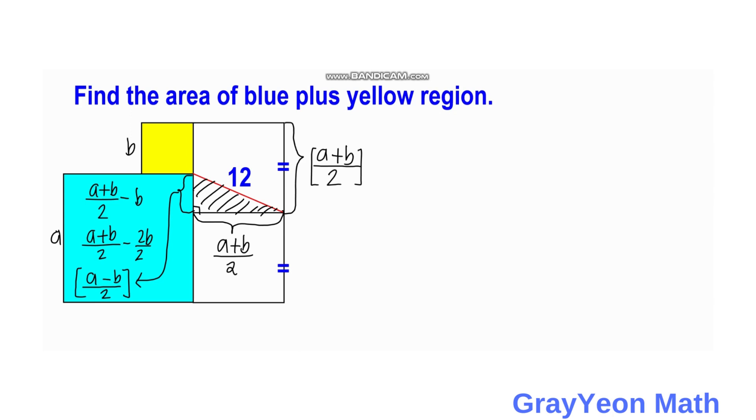So rewriting an equation about that, then we have A plus B over 2 squared, plus A minus B over 2 squared, equals 12 squared.